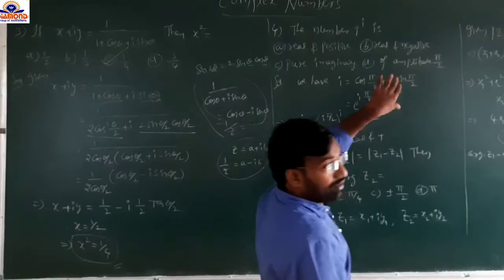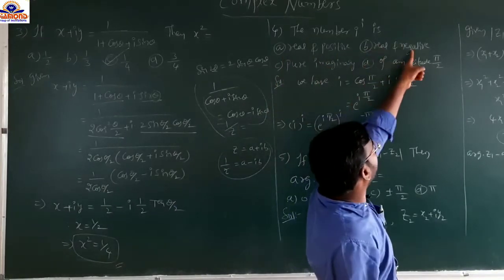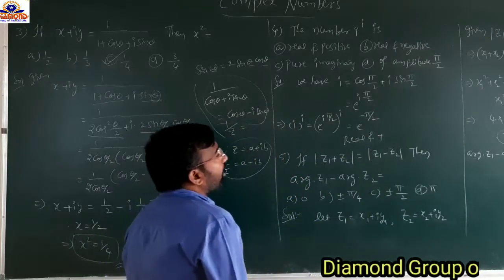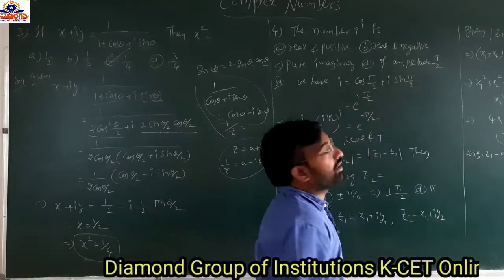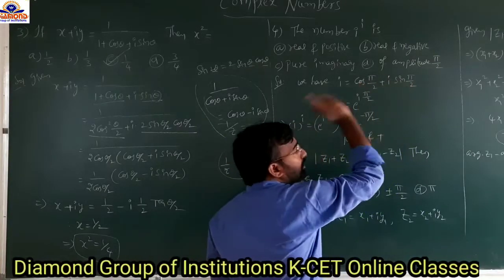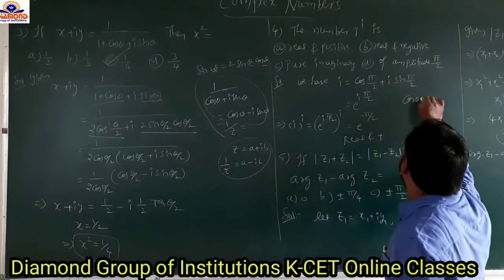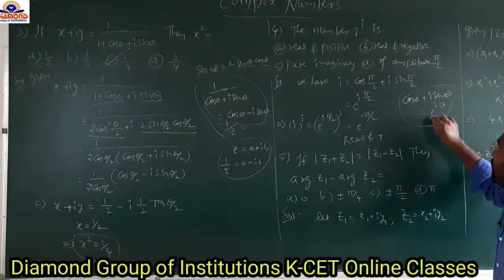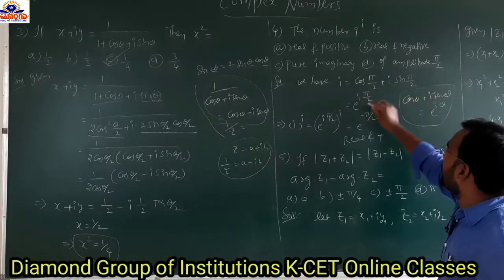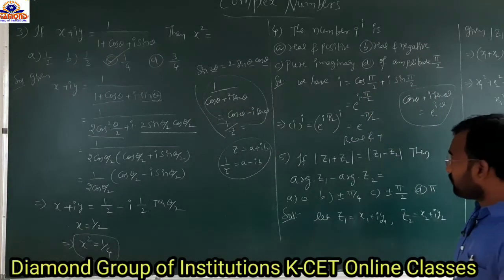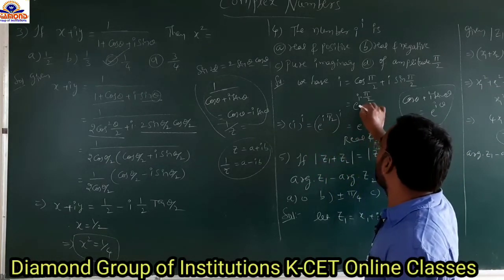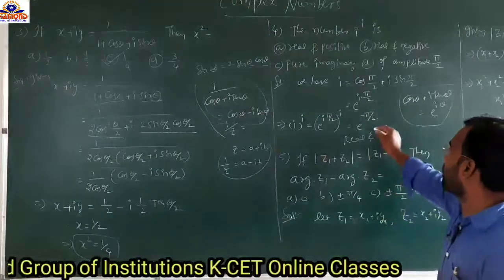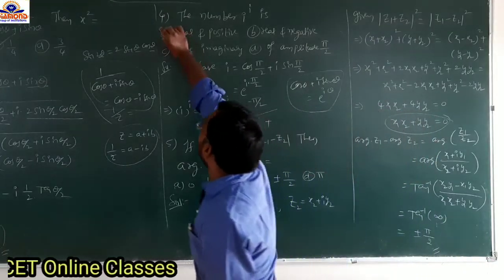The number i^i: is it real and positive, real and negative, pure imaginary, or has amplitude π/2? Generally, i equals cos(π/2) plus i·sin(π/2), since cos(π/2) equals 0 and sin(π/2) equals 1. And cos θ plus i·sin θ equals e^(iθ), so i equals e^(iπ/2). Therefore, i^i equals (e^(iπ/2))^i equals e^(i²·π/2) equals e^(−π/2). This is real and positive — option A.